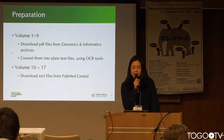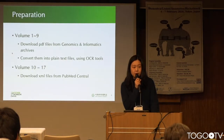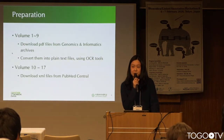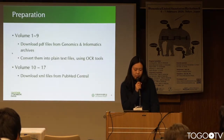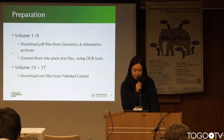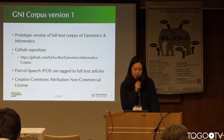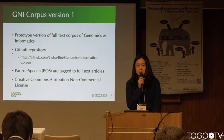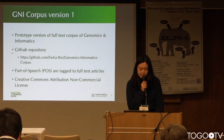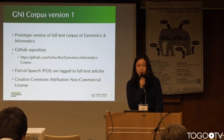To collect the base text, we downloaded PDF files of Volumes 1 to 9 from the Genomics and Informatics archives. Then we converted them into plain text files using PDFminer and OCR tools. We downloaded XML files of Volumes 10 to 17 directly from PubMed Central. The prototype version of the full-text corpus, called GNI Corpus Version 1, has been recently archived in the GitHub repository.